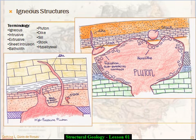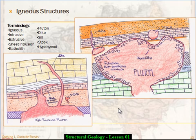Now we're going to move forward, leave salt for a while, and talk about some igneous structures. Here I've got some little cartoons showing you some of our terminology. We talk about igneous rocks, and we remember that those are rocks of magmatic origin.